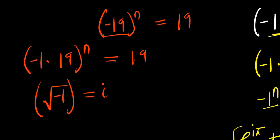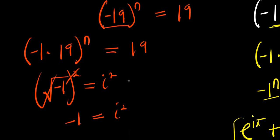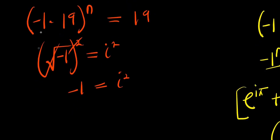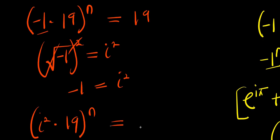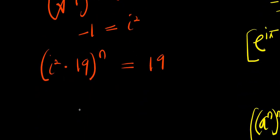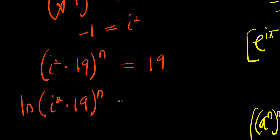That is the imaginary number i — if you take the square root of negative 1, you get i, which means negative 1 equals i squared. So we replace negative 1 with i squared: we have i squared times 19, raised to the power of n, equals 19. Now we apply the natural log: natural log of i squared times 19, raised to the power of n, equals natural log of 19.